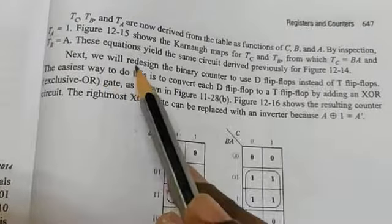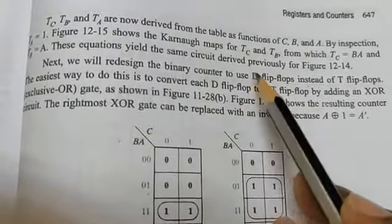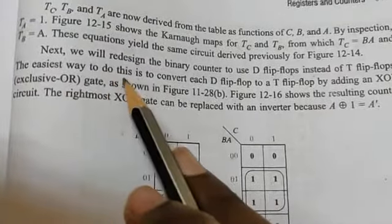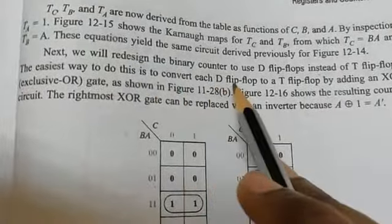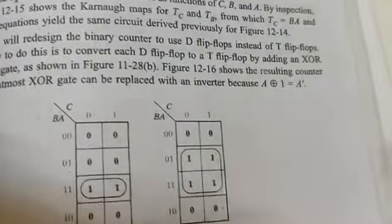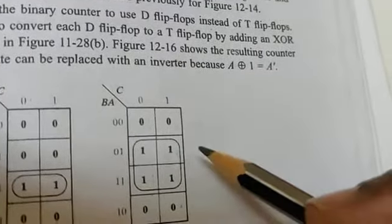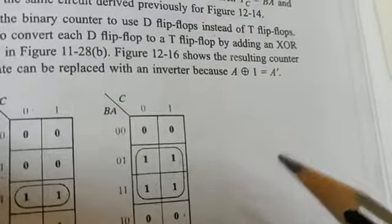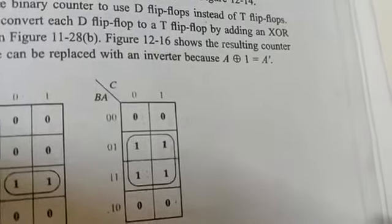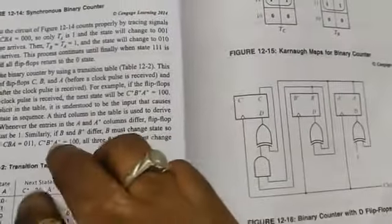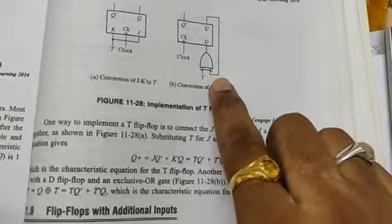What is given here is: we will redesign the binary counter to use D flip-flops instead of T flip-flops. The easiest way to do this is to convert each D flip-flop to a T flip-flop. We have studied this conversion in the previous chapter on flip-flops.